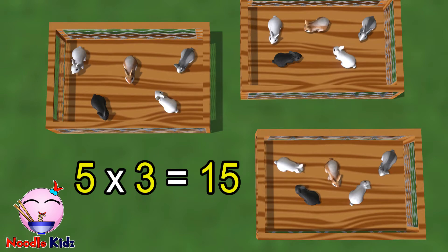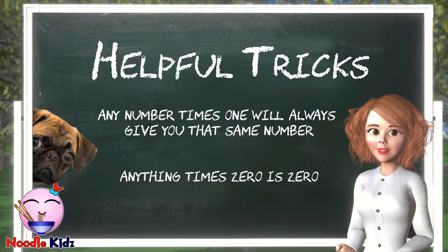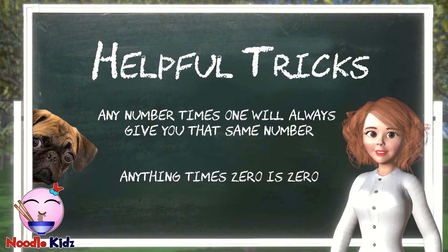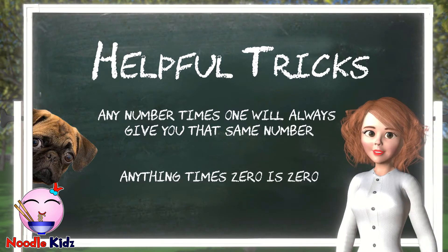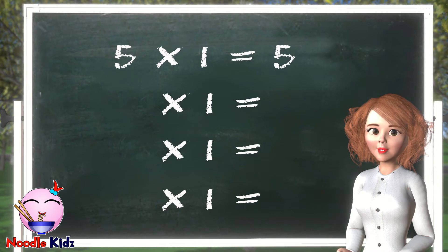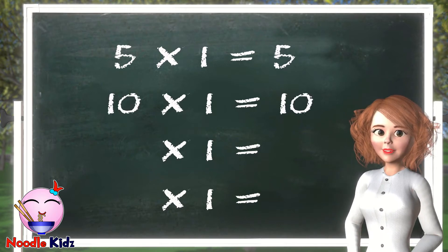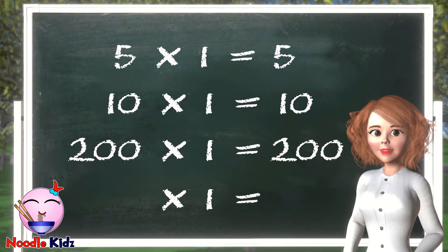See? That was fast, wasn't it? To make calculations fast and easy, there are a few very helpful tricks when it comes to multiplication. The first trick is: any number times one will always give you that same number. For example, five times one equals five. Ten times one equals ten. Two hundred times one equals two hundred.